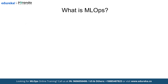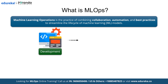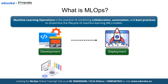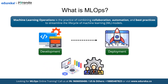What exactly is MLOps? MLOps, short for machine learning operations, is the practice of combining collaboration, automation, and best practices to streamline the lifecycle of machine learning models — from development to deployment and maintenance in production environments. It bridges the gap between data science and operational teams, ensuring that ML models are reproducible, scalable, and reliable in real-world use cases.